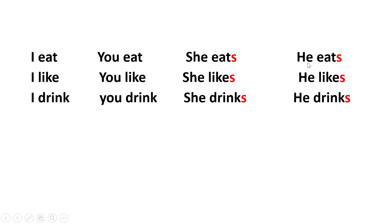With she and he, we add S. We say she eats, she likes, she drinks, she plays. He eats, he likes, he drinks. I, you — no S. No S with a verb. I eat, no S. You eat, no S. But she, he — has S. She eats. He eats.